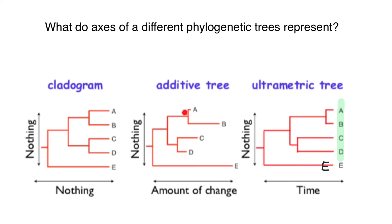Because all the species didn't reach this line, it doesn't mean that they are extinct. So out of all these trees, the least informative would be the cladogram, and the additive tree and ultrametric tree would give us much more information about the species — about time since speciation events and about the amount of change in DNA.